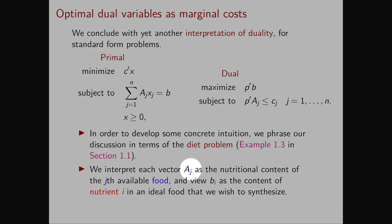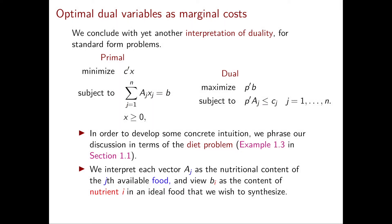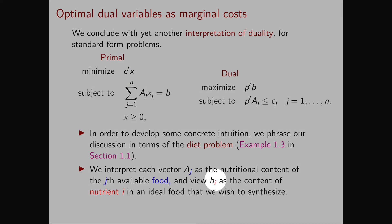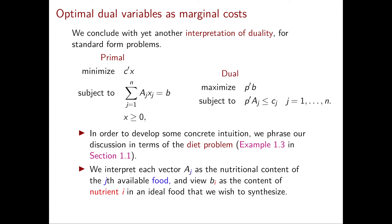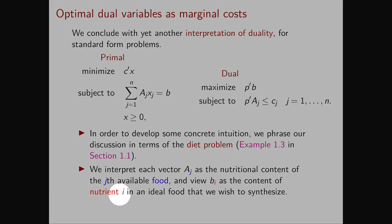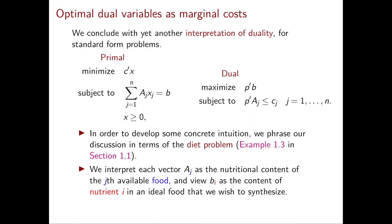we interpreted each column A,J of the matrix A as the nutritional content of the J-th available food. On the other hand, each component Bi of the right-hand side vector is the content of the nutrient i in the ideal food that we want to synthesize.